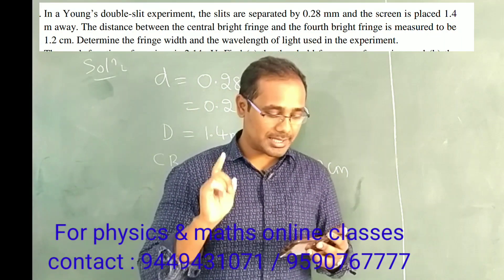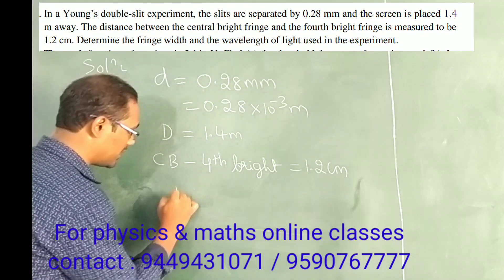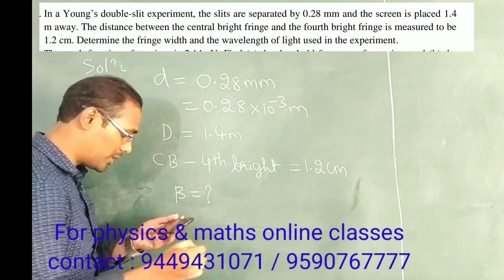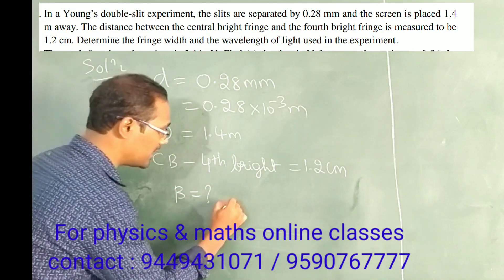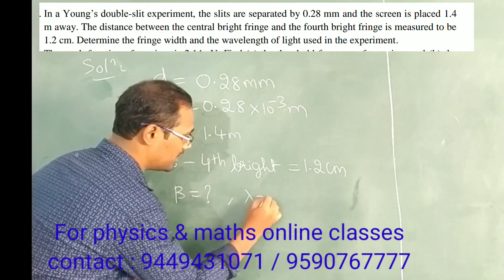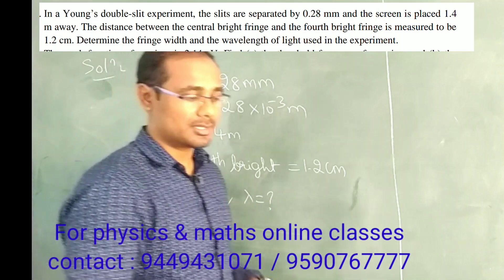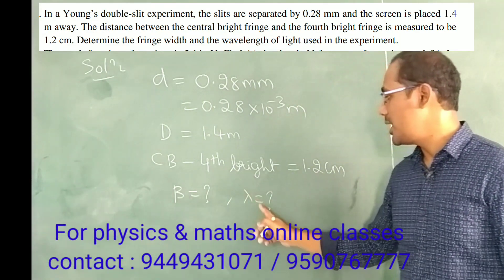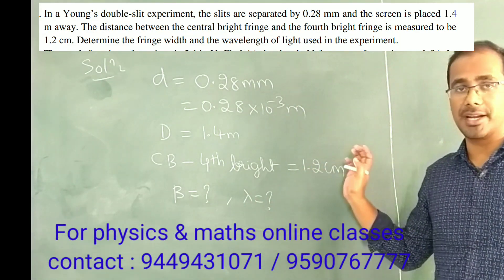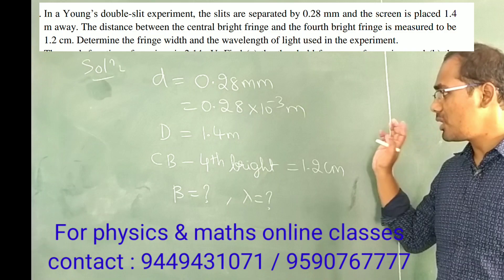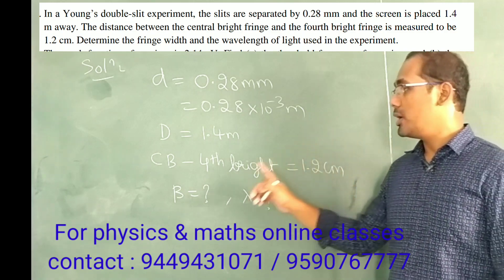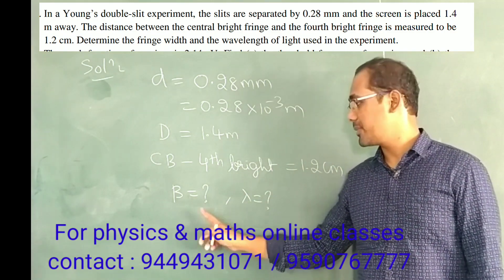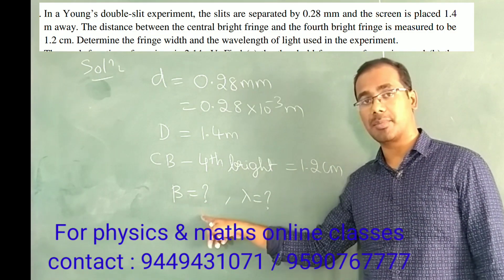So what is fringe width? That is beta, and we need to find the wavelength. The fringe width formula is lambda D by d — that is easy to calculate.